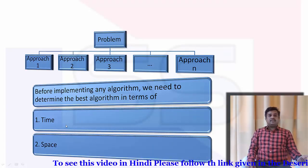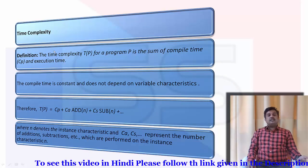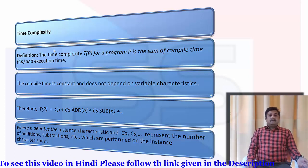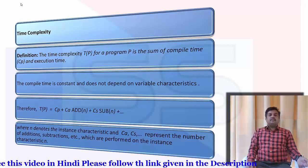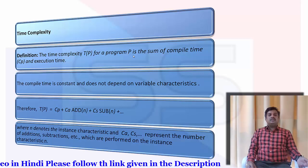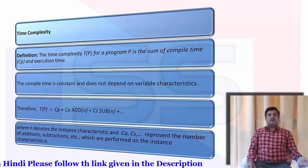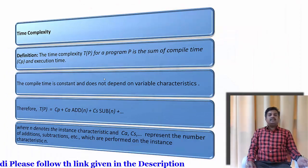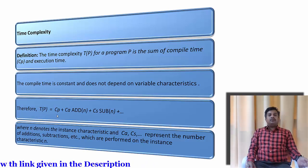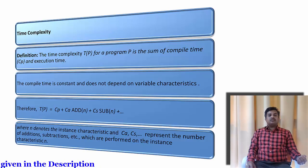So what is time complexity? Let us go to the definition first and then gradually try to solve problems. The time complexity T(p) of a program p is the sum of compile time cp and execution time. Basically compile time is constant and doesn't depend on variable characteristics. So the time complexity is the compile time plus the characteristics — representing addition, subtraction and all those operations — where n is the number of inputs given.